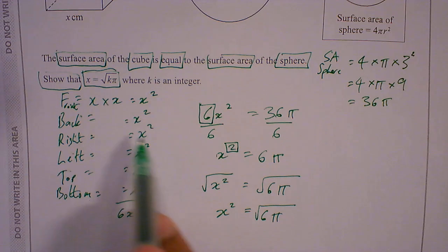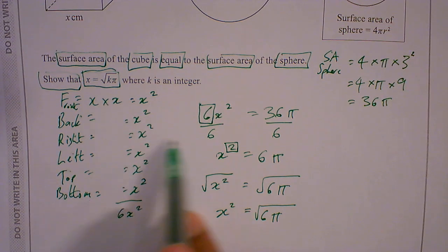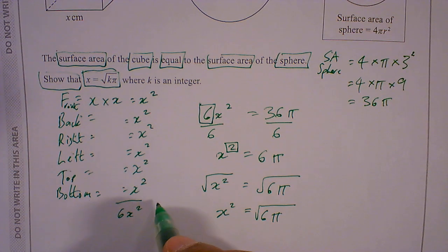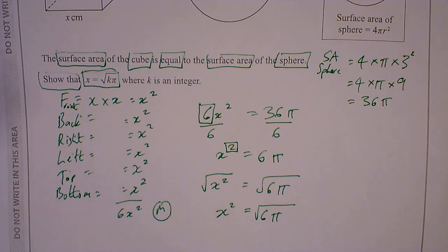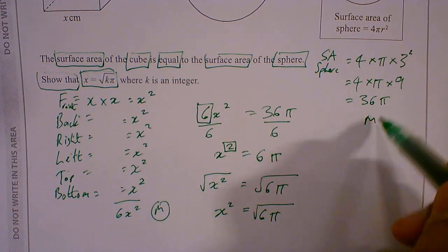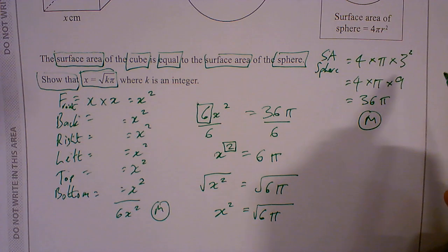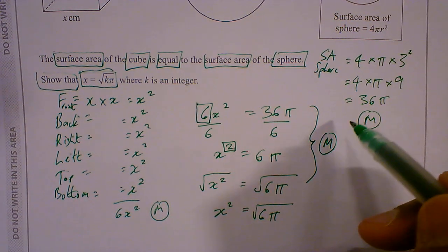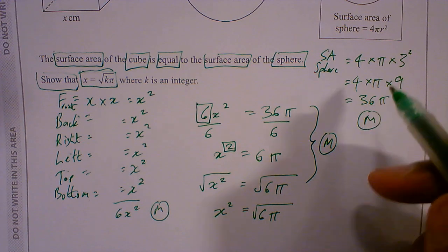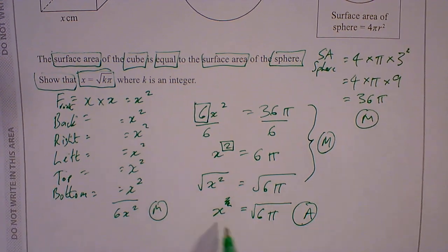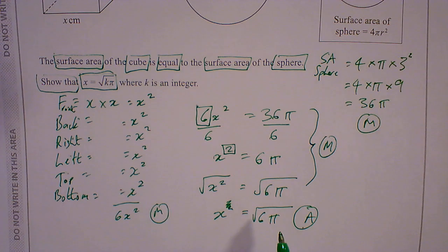So for showing this part here, 6x², showing the surface area of the cube, that's a method mark. The second mark is for showing the surface of a sphere. And then the third mark is this part here. And then the final mark is for getting to this part here. So this is the final mark, x equal to square root 6π.